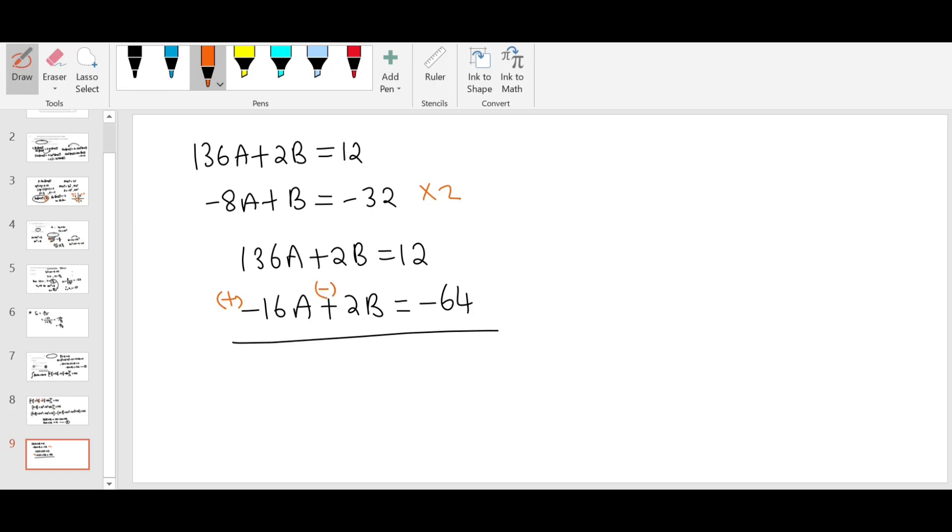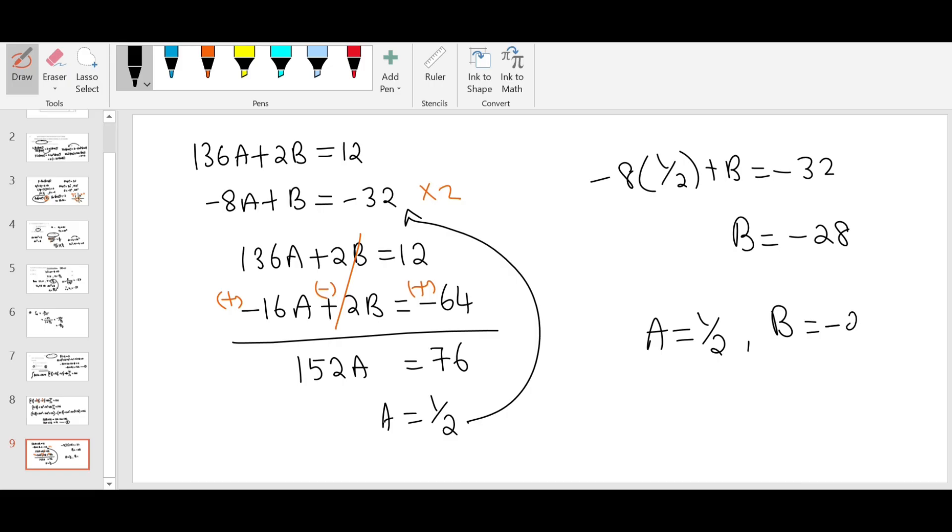I'm going to subtract them. So this becomes plus, minus, plus. This will be cancelled. 152A equals 76. So A is 1 over 2. Sub it back in here: minus 8 times 1 over 2 plus B equals minus 32. This is minus 4, which goes to the other side. B is going to be minus 28. So A is half, B is minus 28. You can also use your calculator to verify this answer.